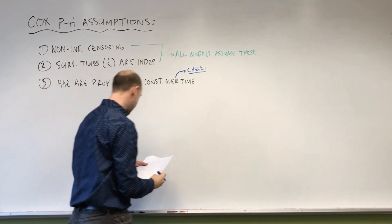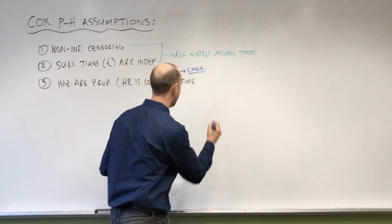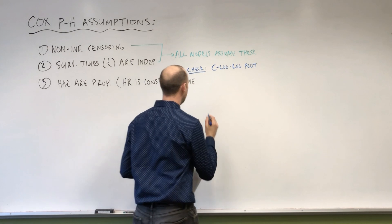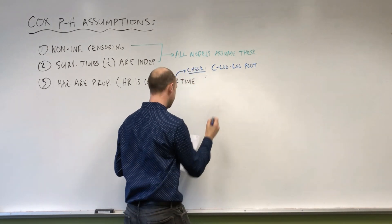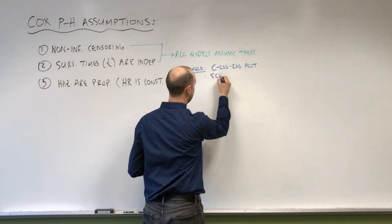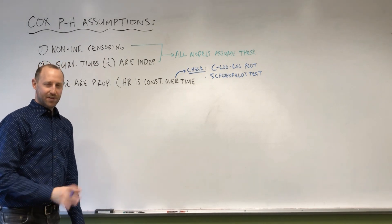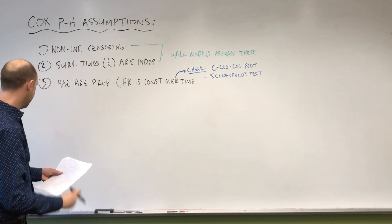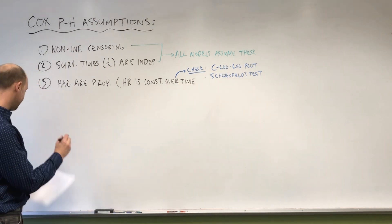Just to mention now is we can check proportional hazards using something called a C-log-log plot. We can also check them using Schoenfeld's test. And I'm sure that there's some others that I'm not aware of in name right now. But those are two of the ways we'll look at checking the proportional hazards assumption.